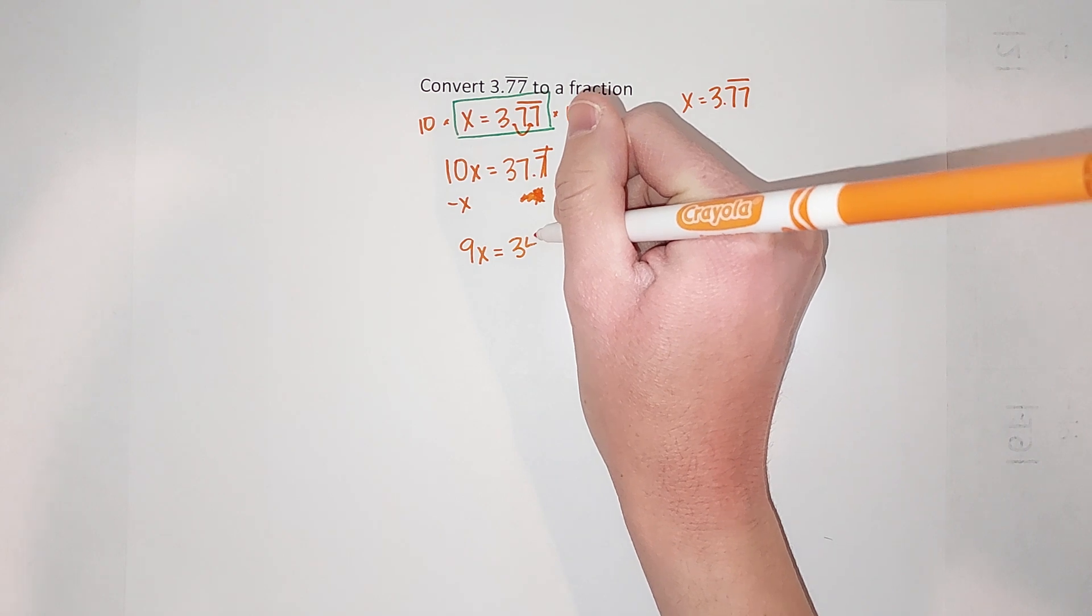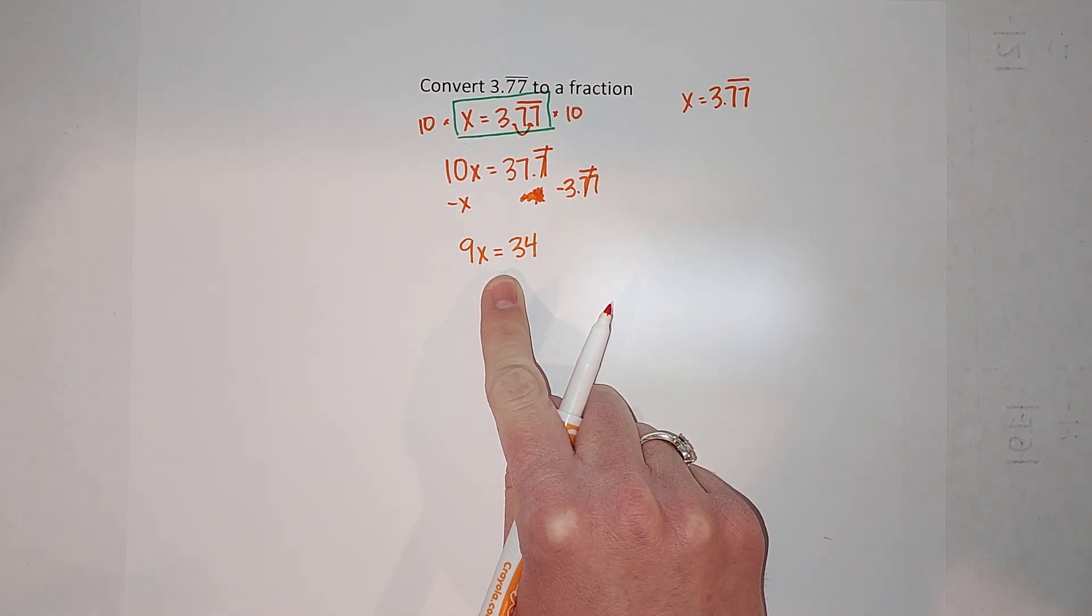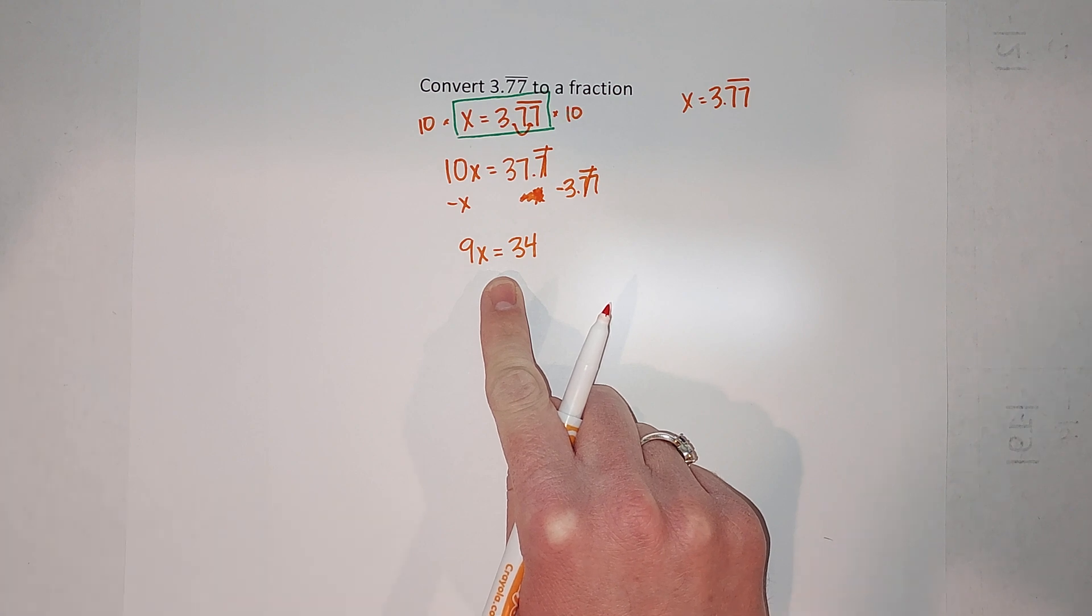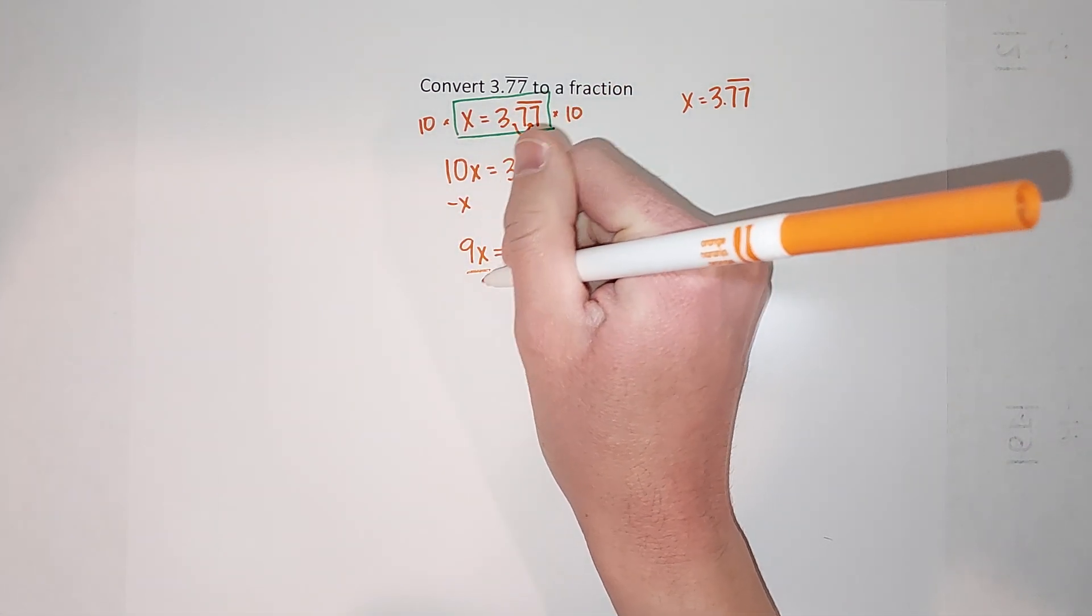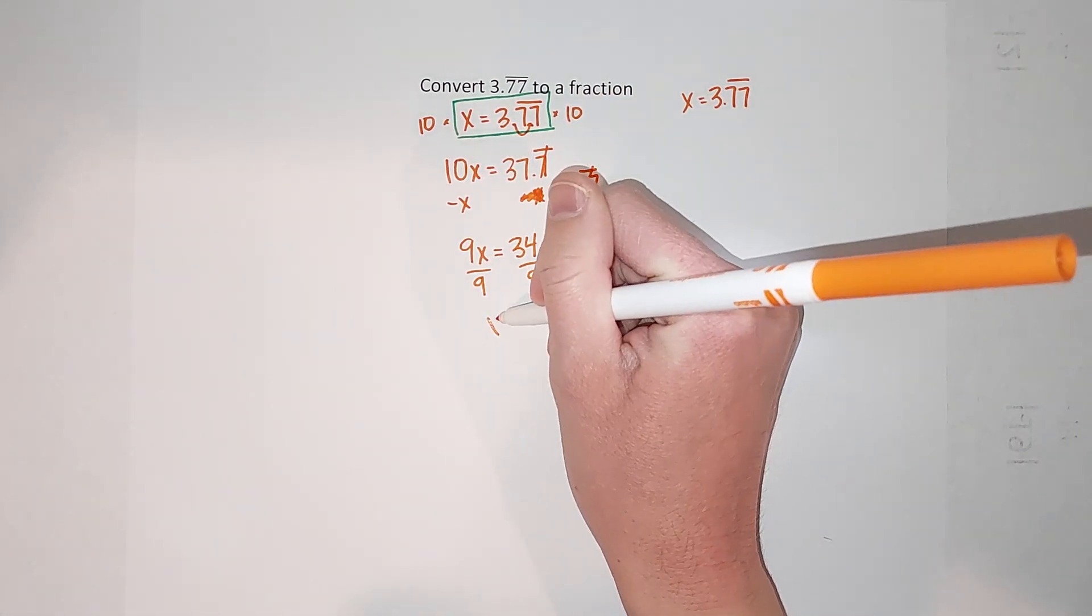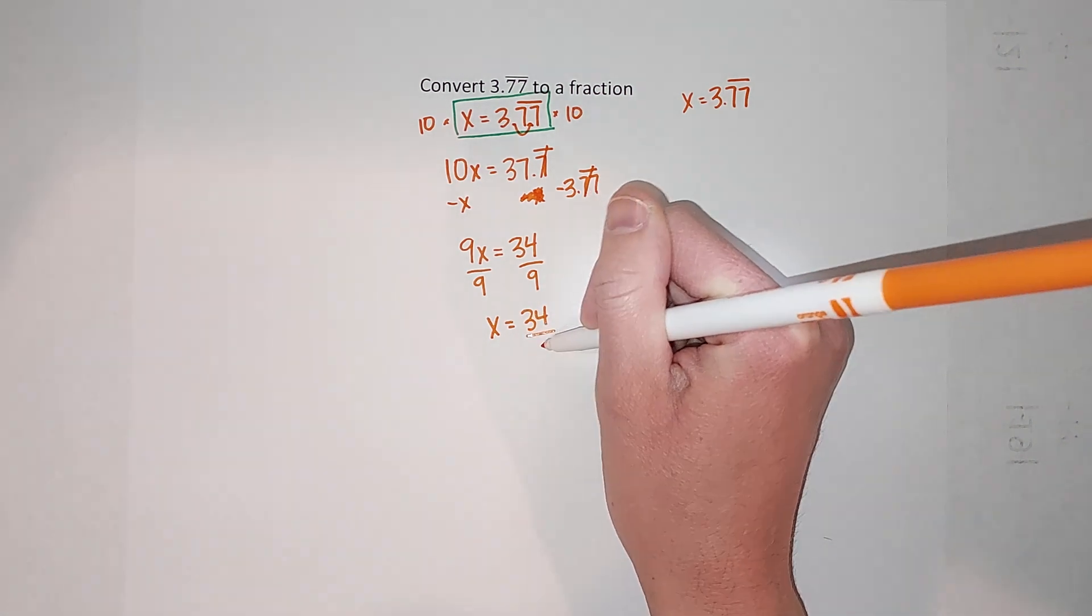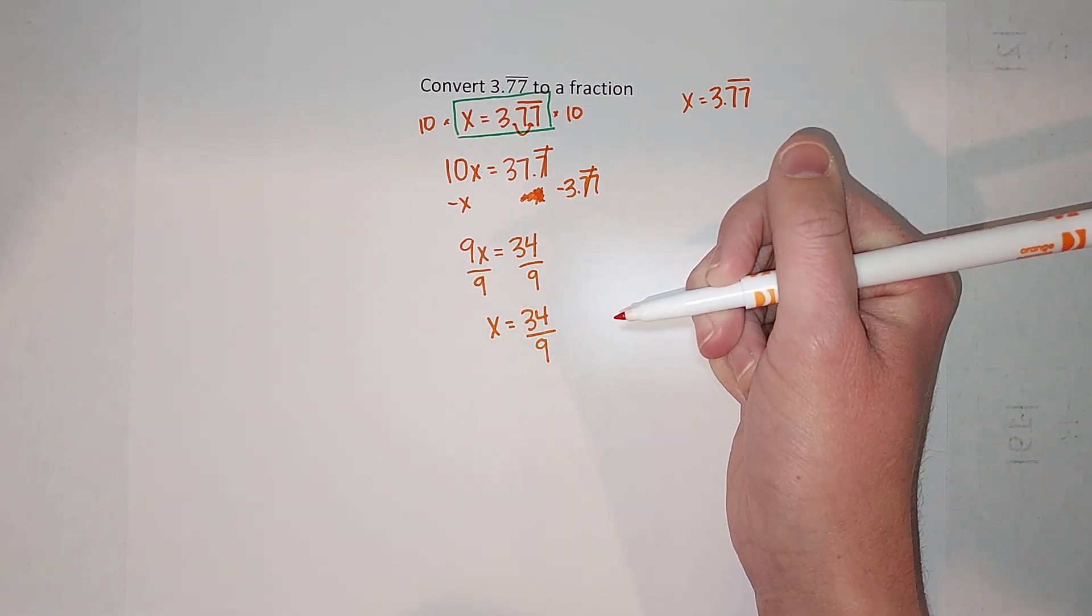And this is a lot less scary or what. Now it's just—you've probably solved things like this a million times just solving for x—so I'm going to divide by 9 on both sides. So I'm left with x equals 34 ninths. That is our fraction.